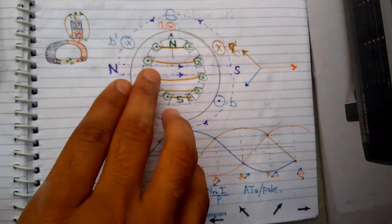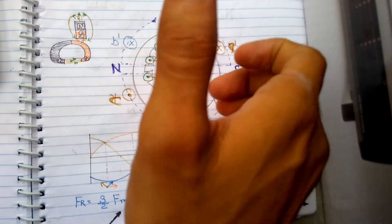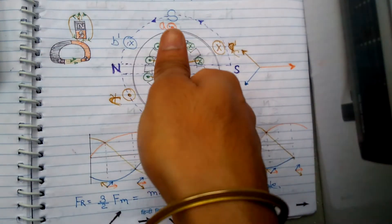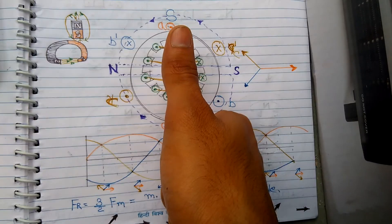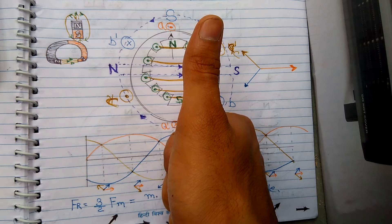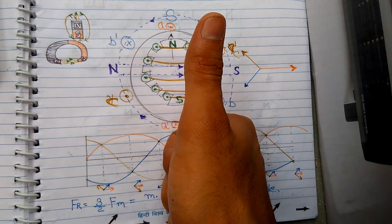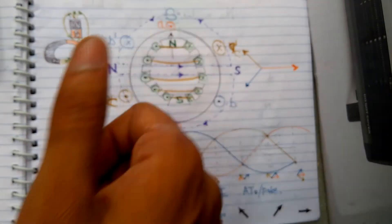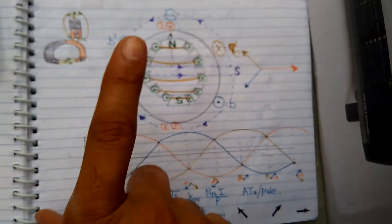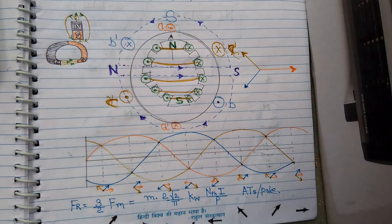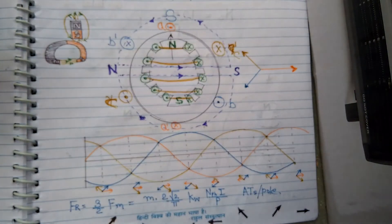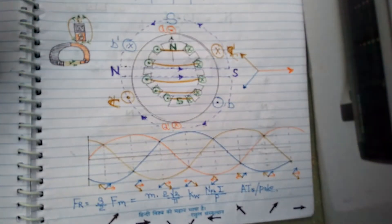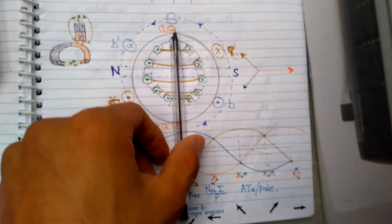If my current is going in the direction of my fingers, then my thumb will be directing towards the direction of my field lines. In the direction of the thumb, the flux density will be maximum. And if I ignore the stator losses, the direction of MMF will be the same as the direction of my flux density. Now, EMF induced in the stator windings will be maximum when those windings are laid in the direction of maximum flux density.